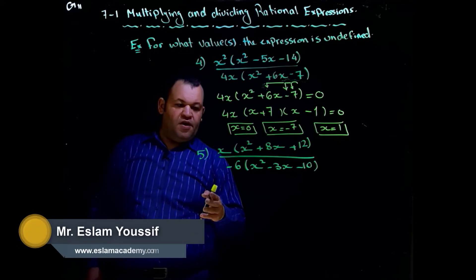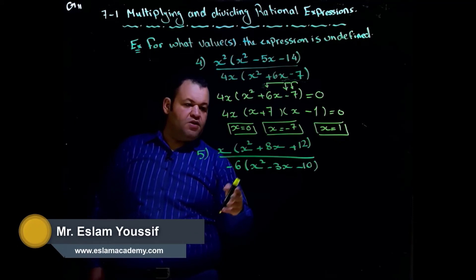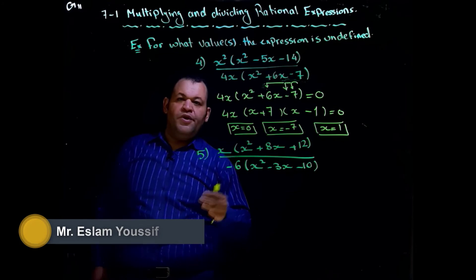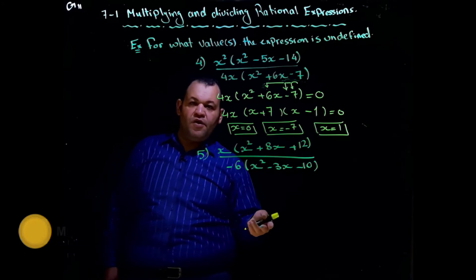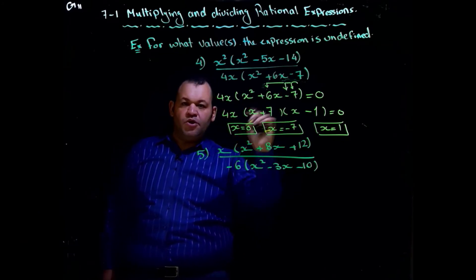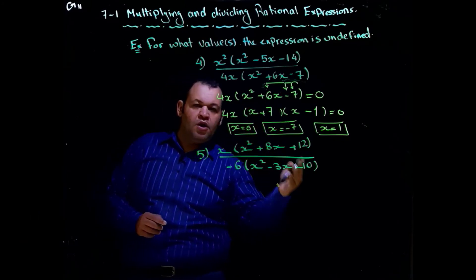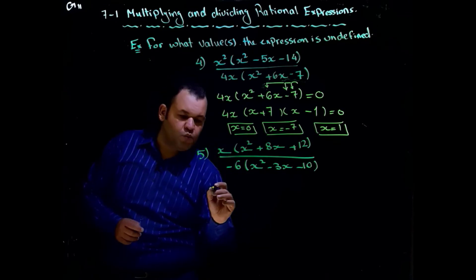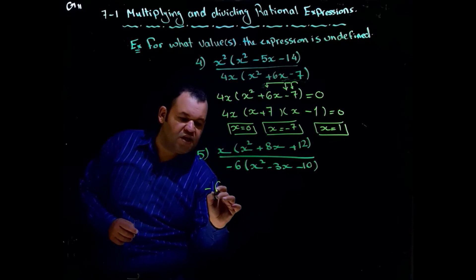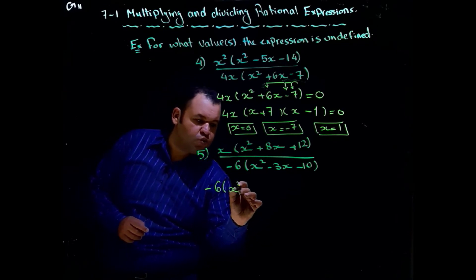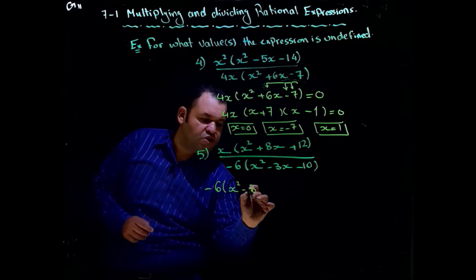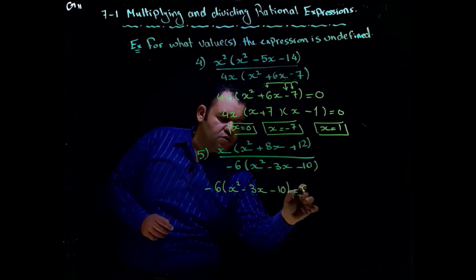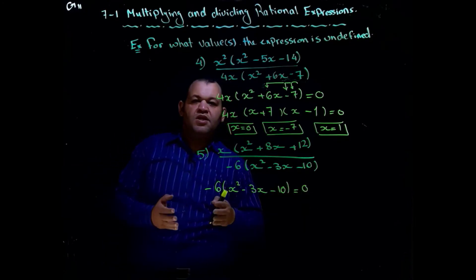For number five, we have x times (x² + 8x + 12) divided by negative six times (x² − 3x − 10). We need to find the value of x which makes the expression undefined, so we work only with the denominator.